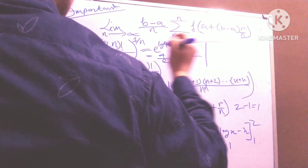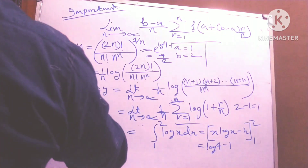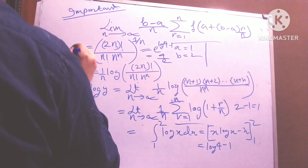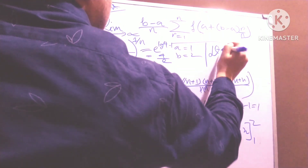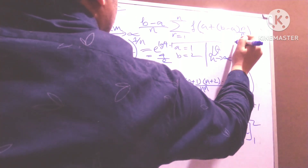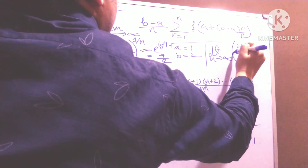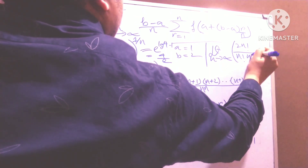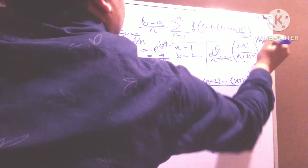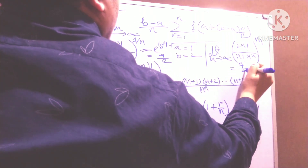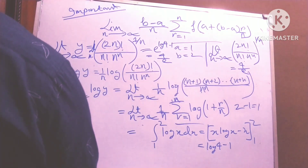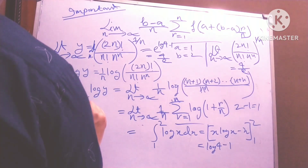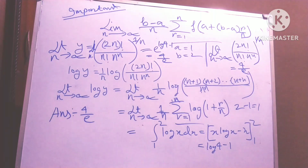So my answer: limit n to infinity of (2n factorial divided by n factorial times n to the power n) to the 1 by n equals 4 by e. So the answer is 4 by e. Thanks for watching. I hope I can clear this concept.